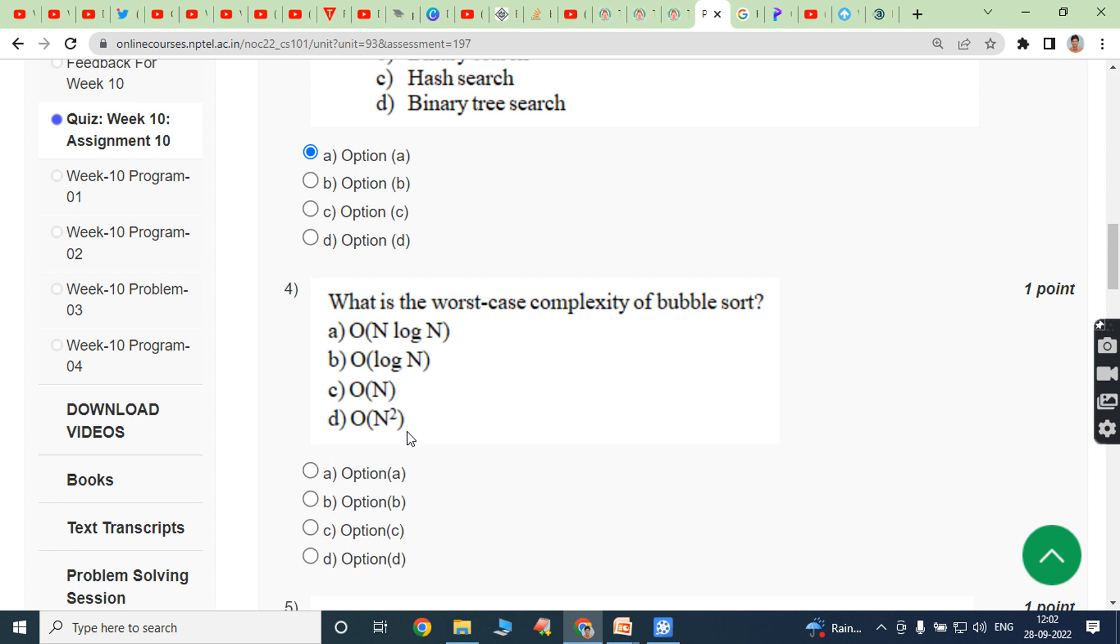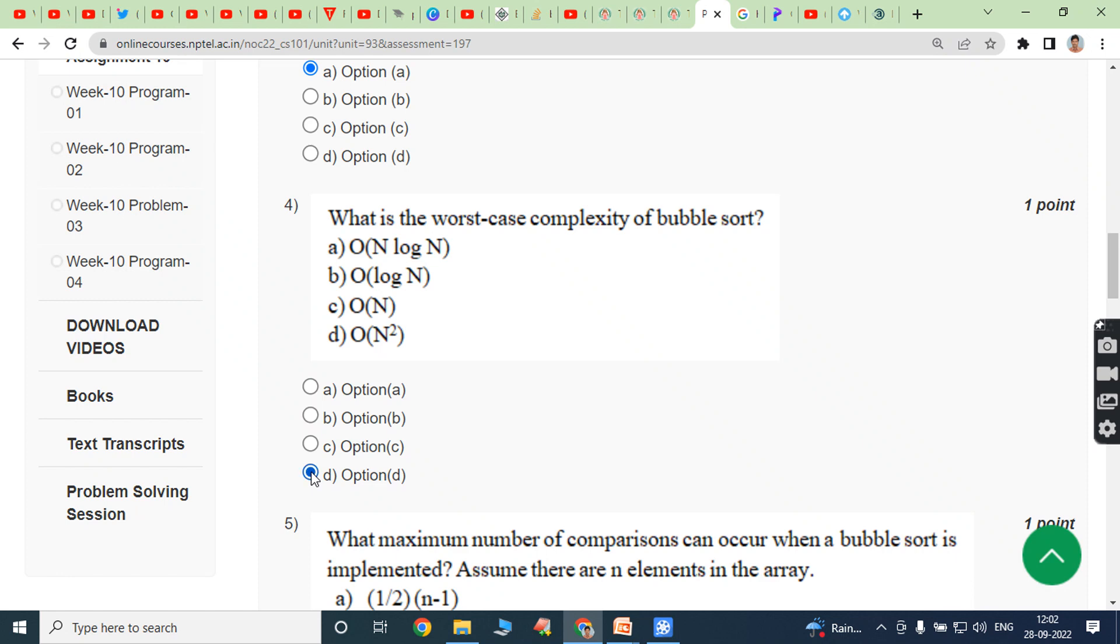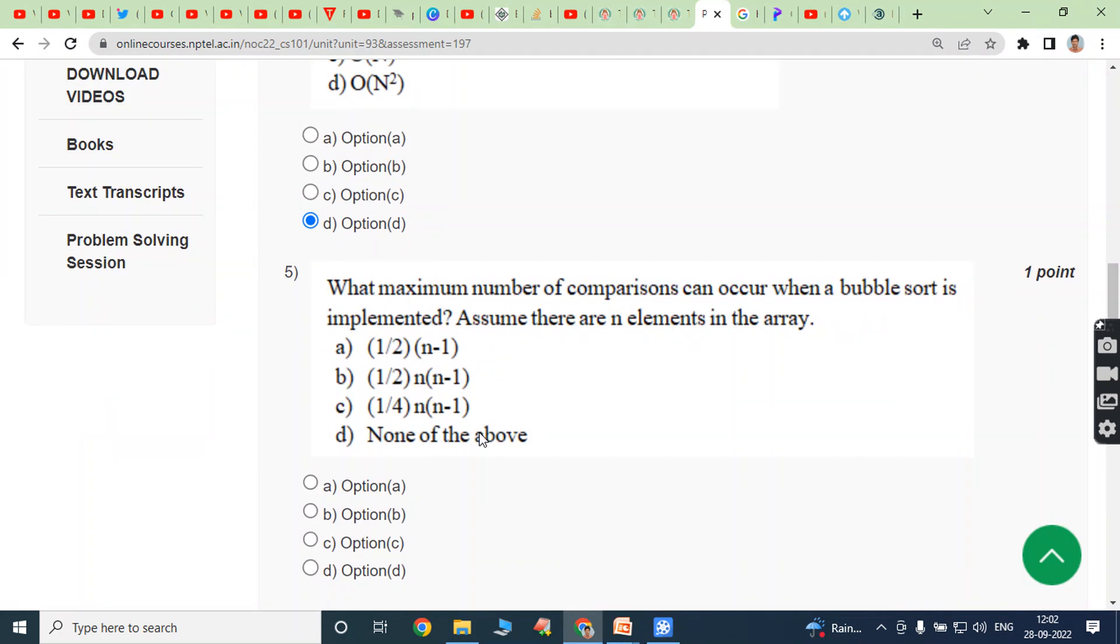Next, fifth bit: What maximum number of comparisons can occur when a bubble sort is implemented? Assume that there are n elements in the array. So answer is half into n into n minus 1. So answer is option B.